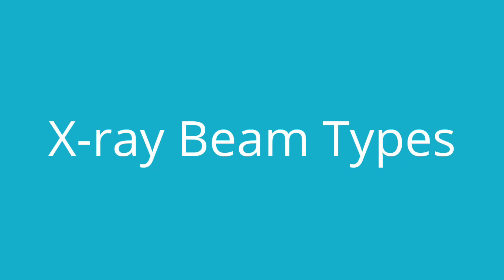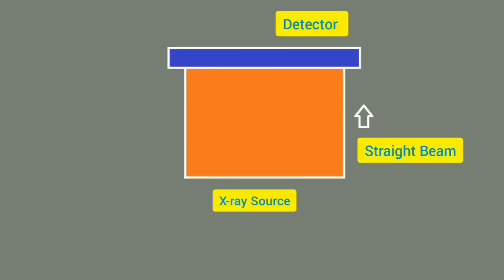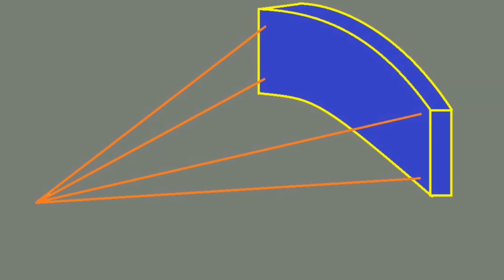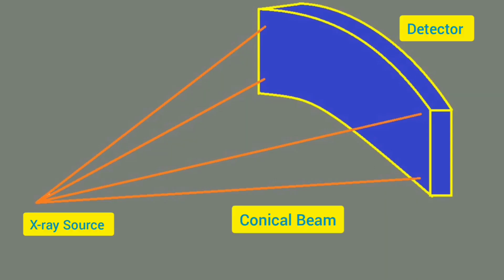In the 7th generation CT, the X-ray beam plays a very important role. First, there is the straight beam where the X-ray source and the detector are aligned and the X-ray beam falls directly on the detector. Then there is a fan-shaped beam from X-ray source to detector, going in the shape of a fan. The third type of projection is the conical beam, where a conical beam falls on the detector.